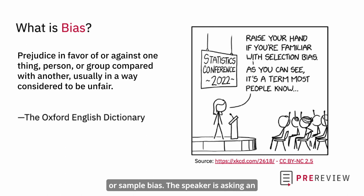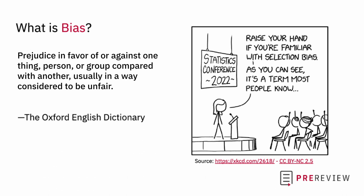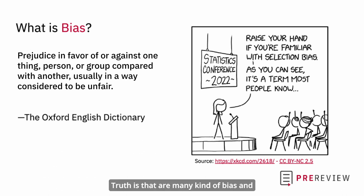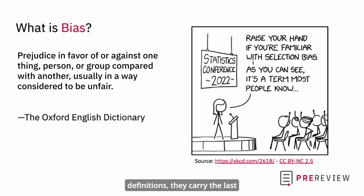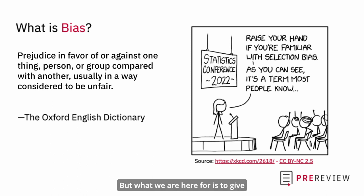The speaker is asking an audience of statisticians if they are familiar with selection bias, then concluding from the many hands raised that it is a term most people know. There are many kinds of bias, they all have different definitions, and they carry the names of the people who first defined them. We are certainly not here to define or unpack them all, but we are here to give additional context to the language we'll be using throughout this video collection.